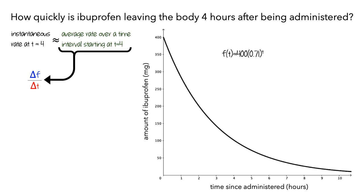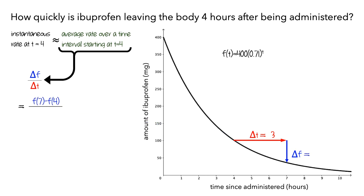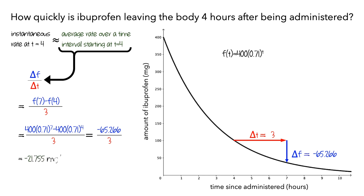To start, we'll use a 3-hour change in time. On the graph, delta t can be represented by the length of a red arrow from the point on the function at time 4. Here, delta t is 3. Delta f would be the corresponding length of the blue arrow, which we compute by subtracting f evaluated at 4 from f evaluated at 7. So the average rate is the change in the values of the function divided by 3. Since we have a formula for f, we can evaluate the function at t equals 7 and t equals 4, compute the difference, and divide. This gives us an average rate of –21.755 mg per hour.